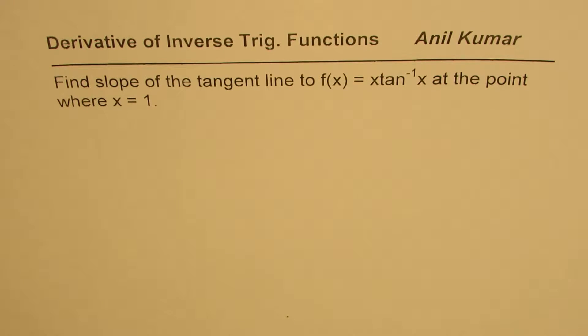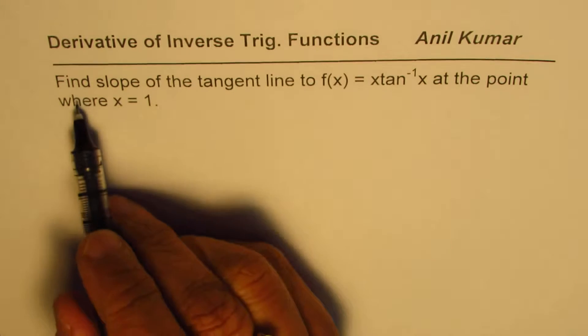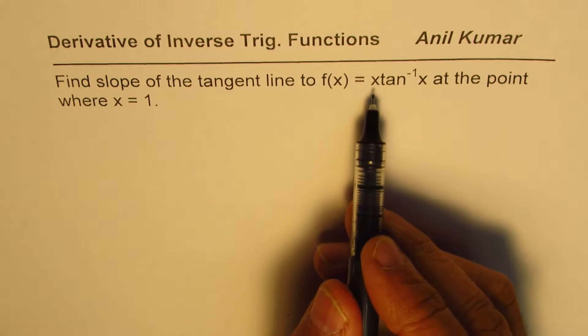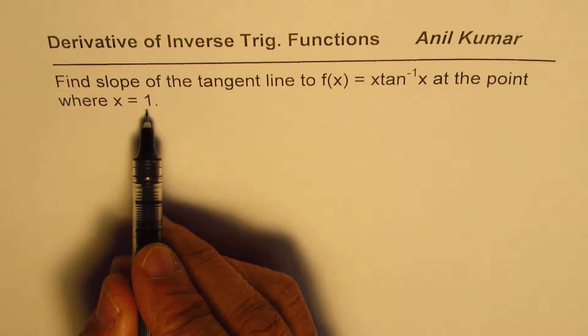I'm Anil Kumar, sharing with you a review question on derivatives of inverse trigonometric functions. Find the slope of tangent line to f(x) = x tan⁻¹x at the point where x = 1.